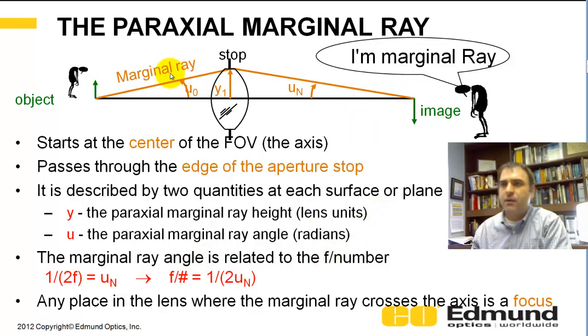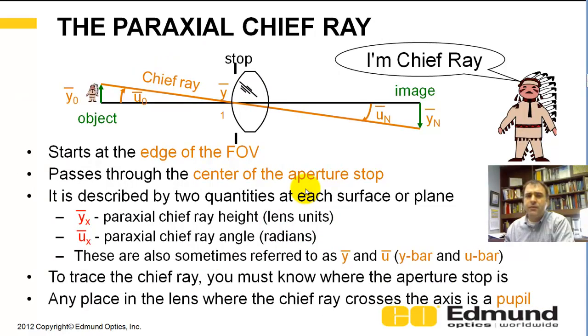The marginal ray in image space defines the working F-number. For a finite conjugate, the working F-number is 1 over 2 times that marginal ray angle.